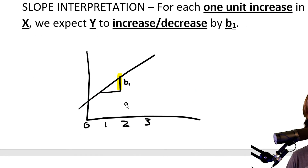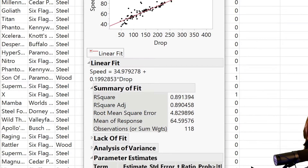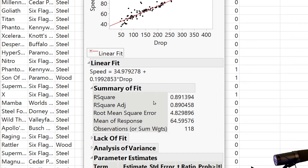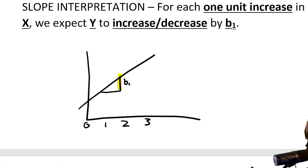Next, we need to interpret the slope. Looking back, the slope is about 0.2. Let's give it an interpretation with the values of speed and drop, where speed is Y and drop is X. For each one unit increase in feet for the drop of the rollercoaster, we'd expect the speed of the rollercoaster to increase by 0.2 miles per hour. There is a positive relationship between speed and drop. Make sure to use your context.